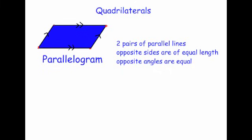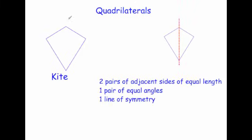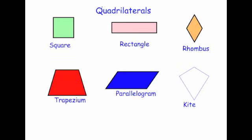Finally, a kite has two pairs of adjacent sides of equal length — the bottom-right and bottom-left sides are equal, and the top-left and top-right sides are equal. It has one pair of equal angles, and it has one line of symmetry. So those are the six types of quadrilaterals: square, rectangle, rhombus, trapezium, parallelogram, and kite.